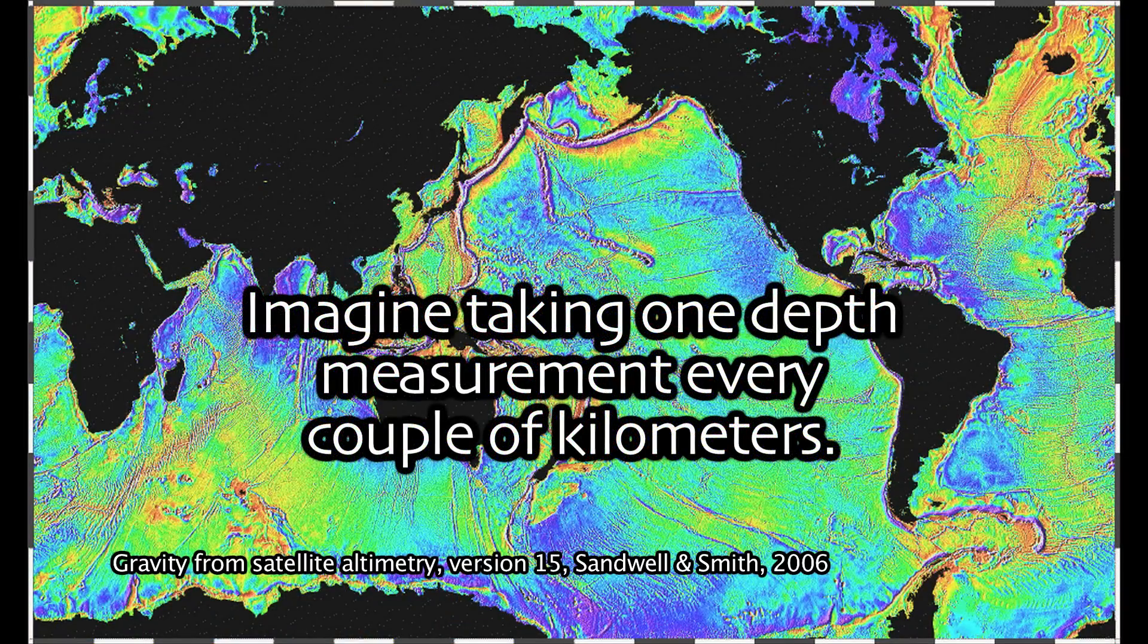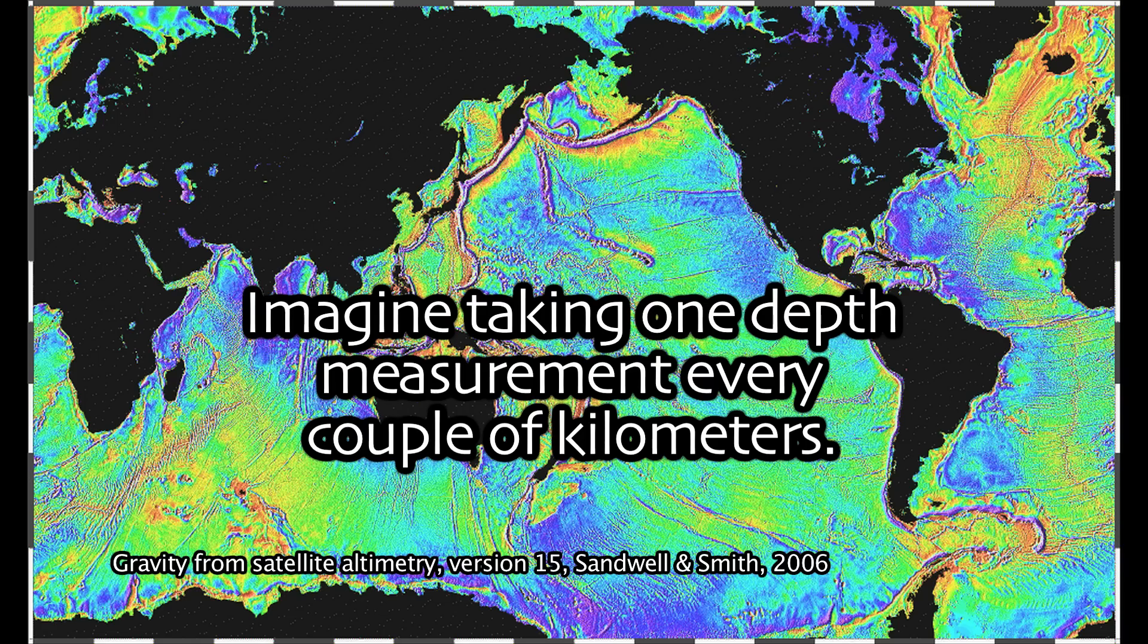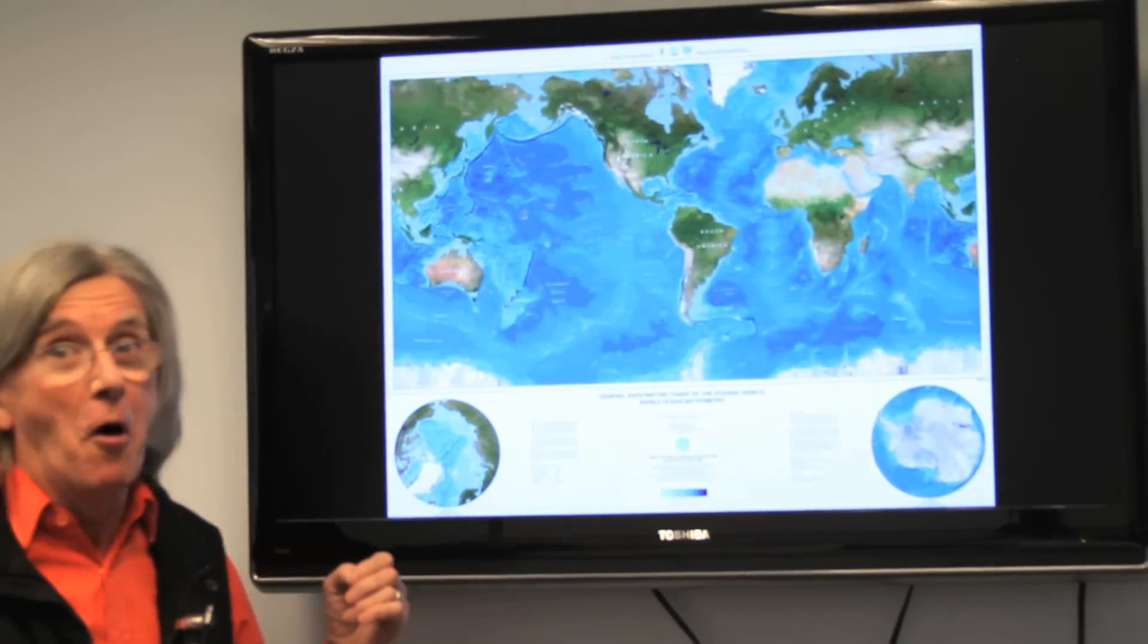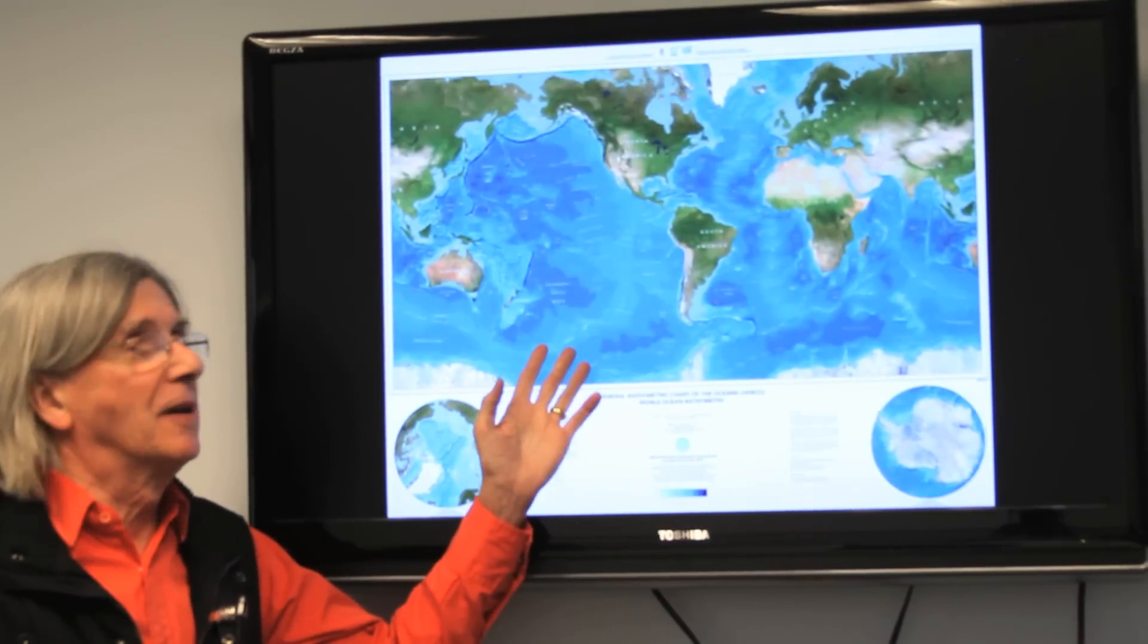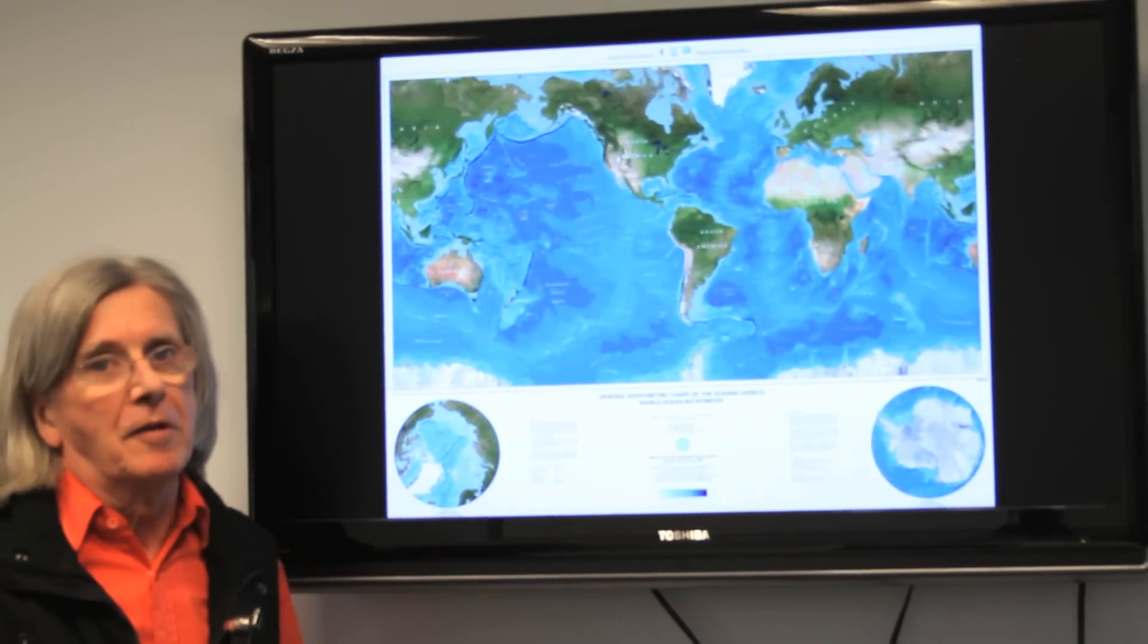Imagine taking one depth measurement every couple of kilometers. One of the things that we do wrong sometimes is we make beautiful maps like this. And people look at them and say, well, you're finished.